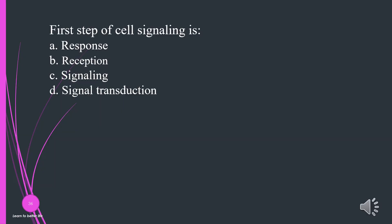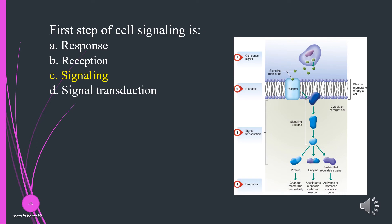First step of cell signaling is? A. Response. B. Reception. C. Signaling. D. Signal transduction. The answer is C, signaling.